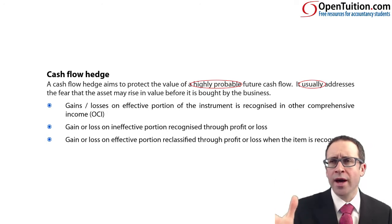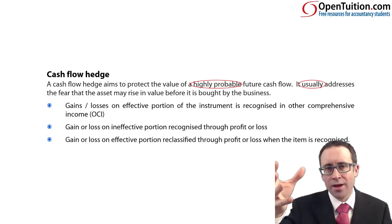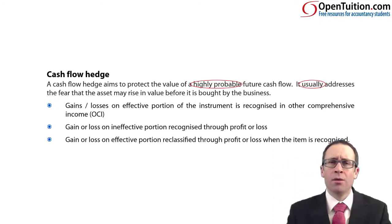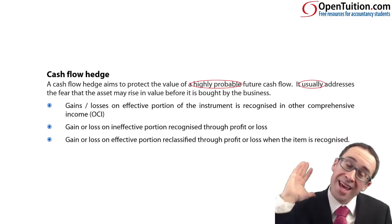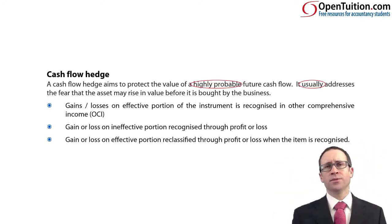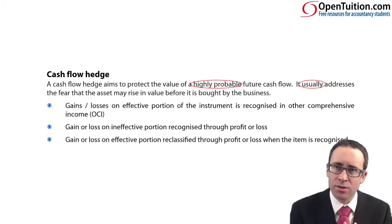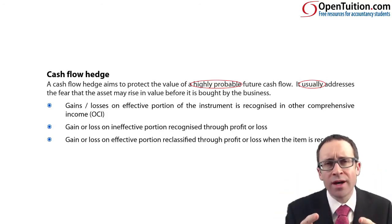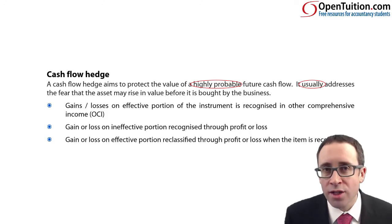Why? Because once you've bought the item, that is when you realise the gain or loss on the item. So we can match up that hidden loss or gain from OCI into profit or loss. We recognise the purchase of the item and any corresponding gain or loss on it in profit or loss. Even though you have a derivative, the usual rules are that gains and losses go through profit or loss — but not if that derivative is used as part of a cash flow hedge.